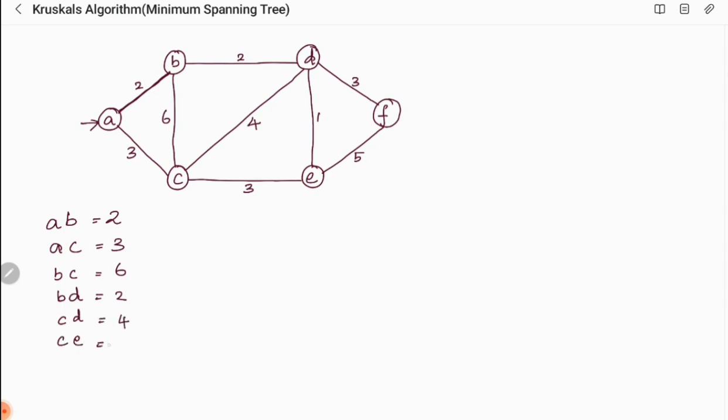CE with cost 3, DE with cost 1, DF with cost 3, and EF with cost 5. So I have written the edges along with the weights given in that particular graph.